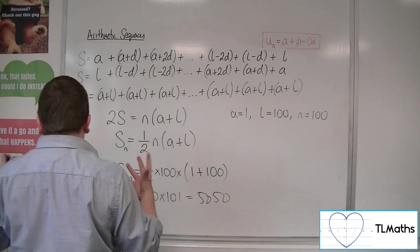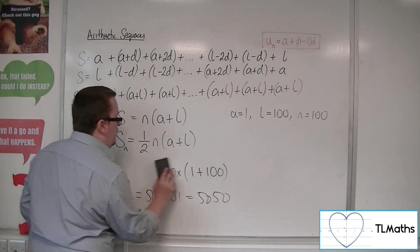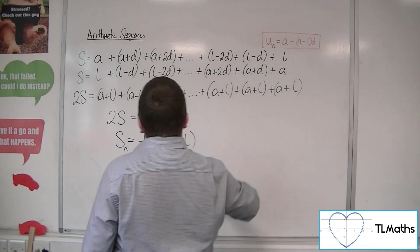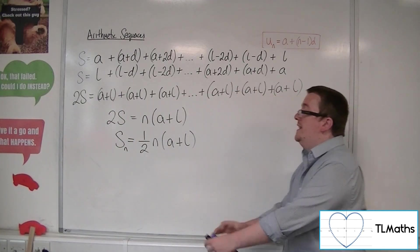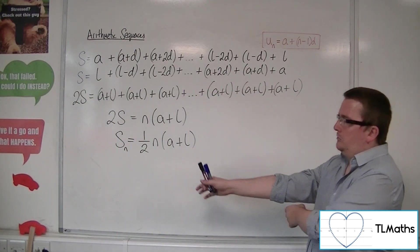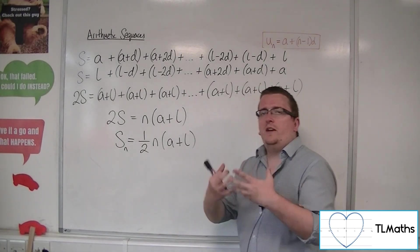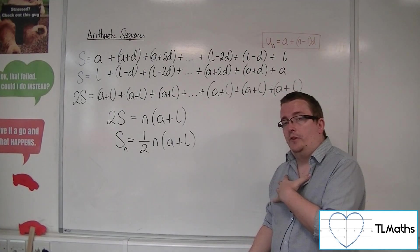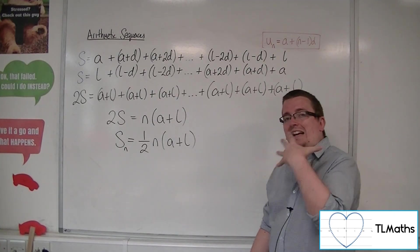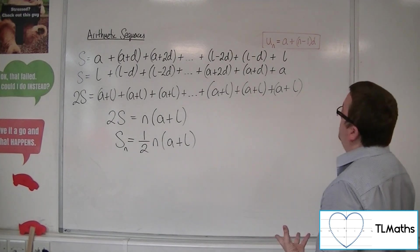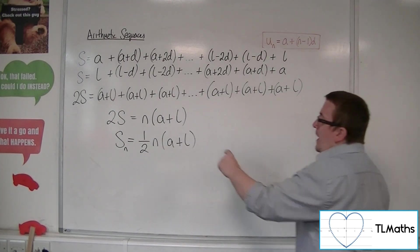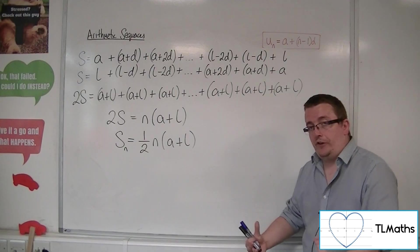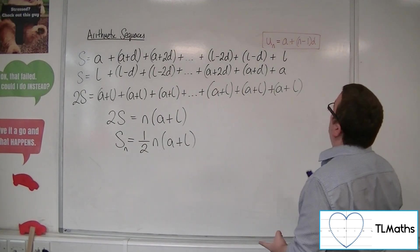Now this all presupposes that I know what the last term of the sequence is. What if I didn't? Well, I know that it would have the nth position, because if I was saying it's the sum to n terms, the last term has position n in the sequence. So I know that l is actually my nth term. Now, if l is the nth term, I have a formula for the nth term.